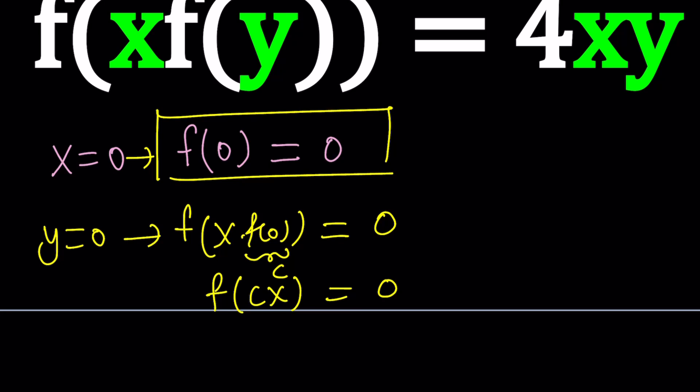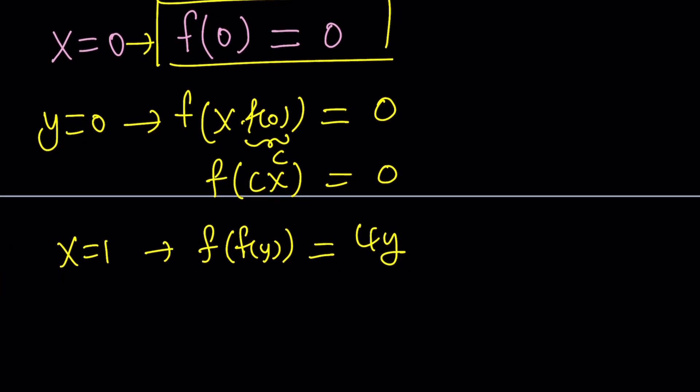How about using 1. 1 is also a good one. So let's replace x with 1. That's going to give us f(1) times f(y) which is f(f(y)) equals 4 times 1 times y which is 4y. So again along with f(0) this kind of gives us an idea about what f could be. And if I assume that f is linear then I can come up with a solution.